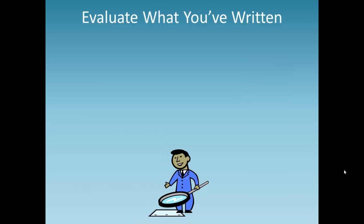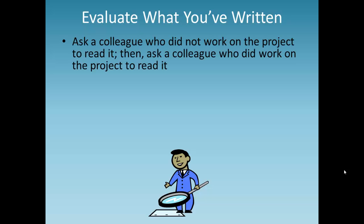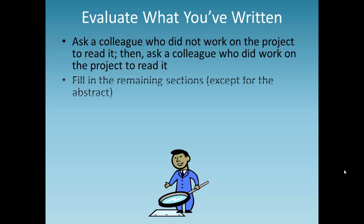Once you finish your first draft, carefully evaluate what you've written. Is it thorough? Ask a colleague who didn't work on the project to read the paper. Then ask a colleague who did work on the project to read it. Consider any feedback they might have on how to improve your paper. Fill in any remaining sections except for the abstract — you'll write that once you're sure the paper is complete. An acknowledgment section isn't always necessary, but if you do include one, keep it short.